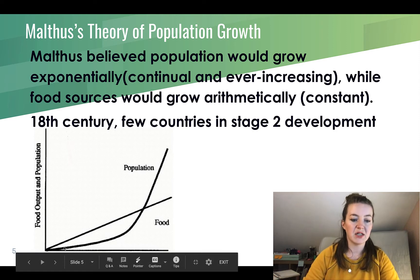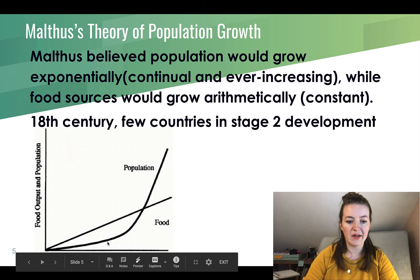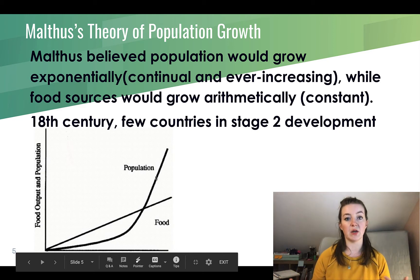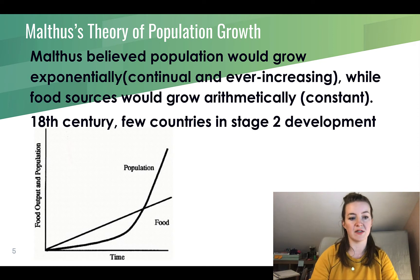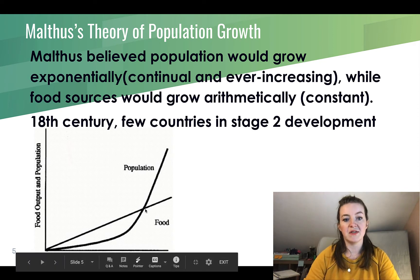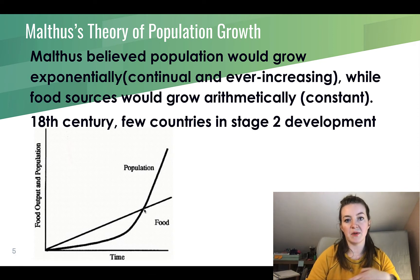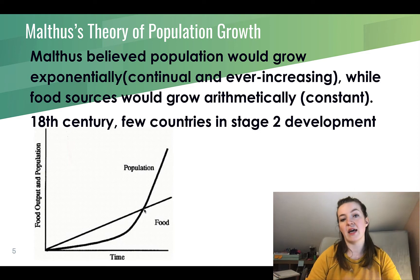Population stays along the same line for a while, then all of a sudden begins to spike and just keeps growing and growing. This is what Malthus believed and was concerned with. You can see that the population is going to drastically outpace food sources.